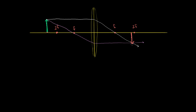So it's going to be a real image — the rays actually converge here. It is a real, inverted image: it was pointing up before, now it's pointing down. And in this situation, it's actually going to be smaller than the original. It's a real, smaller, inverted image.